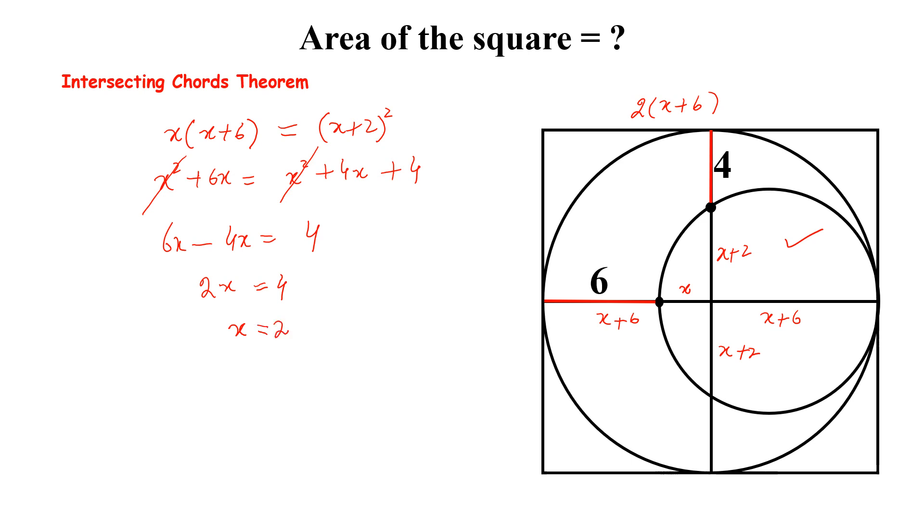So the side of the square is 2 times (2 plus 6), which is 2 times 8, equals 16. The area of the square is 16 multiplied by 16, which equals 256. This is the required answer.